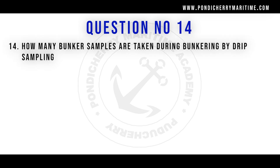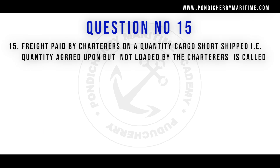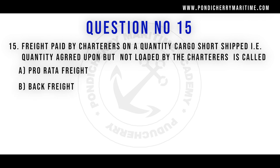Question fourteen: How many bunker samples are taken during bunkering by drip sampling? Option A: One. Option B: Two. Option C: Three. Option D: Four. Correct answer is four. Question fifteen: A freight paid by the charterer on a quantity of cargo agreed upon but not loaded by the charterer is called: Option A: Pro-rata freight. Option B: Back freight. Option C: Dead freight. Option D: None of the above.